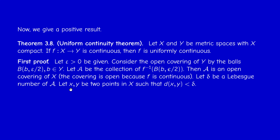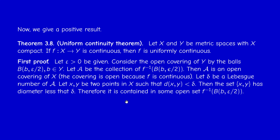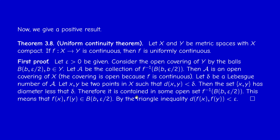This means any set of diameter less than delta is contained in one element of the covering. Pick two points x and y whose distance is less than delta. Then the set consisting of just x and y has diameter less than delta, so it's contained in one of these sets. Therefore there exists b in Y such that x and y are both in the inverse image of the ball of center b and radius epsilon over 2. This means f(x) and f(y) both belong to that ball, so their distances to b are each less than epsilon over 2. By the triangle inequality, the distance between f(x) and f(y) is less than epsilon — this is uniform continuity.